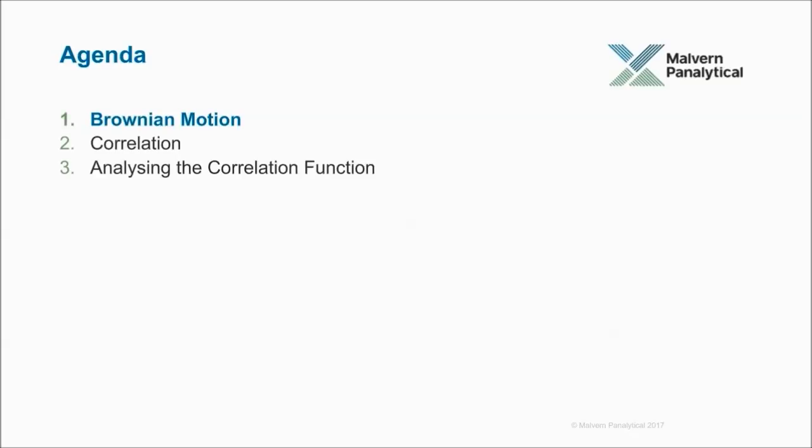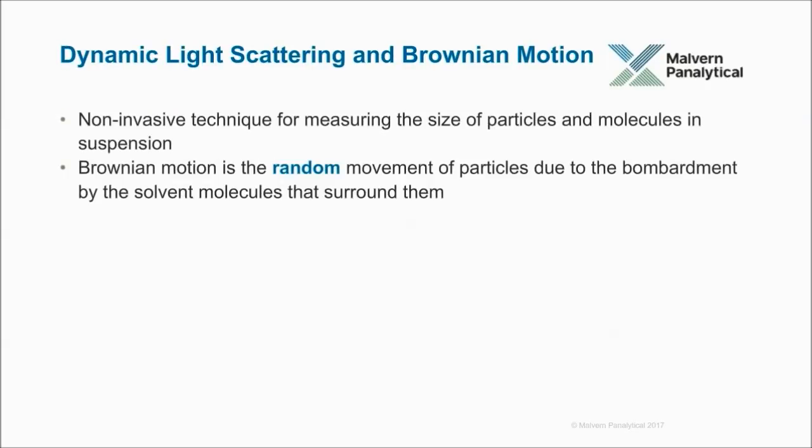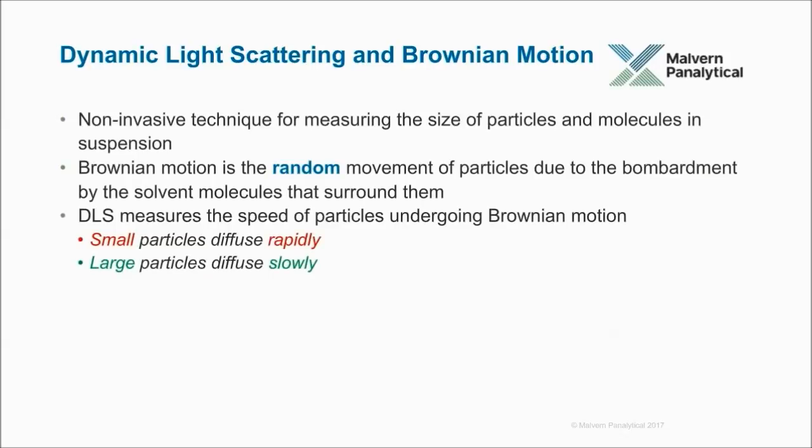So let's start with Brownian motion. Dynamic light scattering, and I suppose the first thing I should say is different people know this technique by different names. We are going to refer to it as dynamic light scattering today. Sometimes it's known as photon correlation spectroscopy, and sometimes it's known as quasi-elastic light scattering. So three different names for the same technique. And the technique is non-invasive. In other words, we place our sample into a cuvette. We shine a laser into that sample.